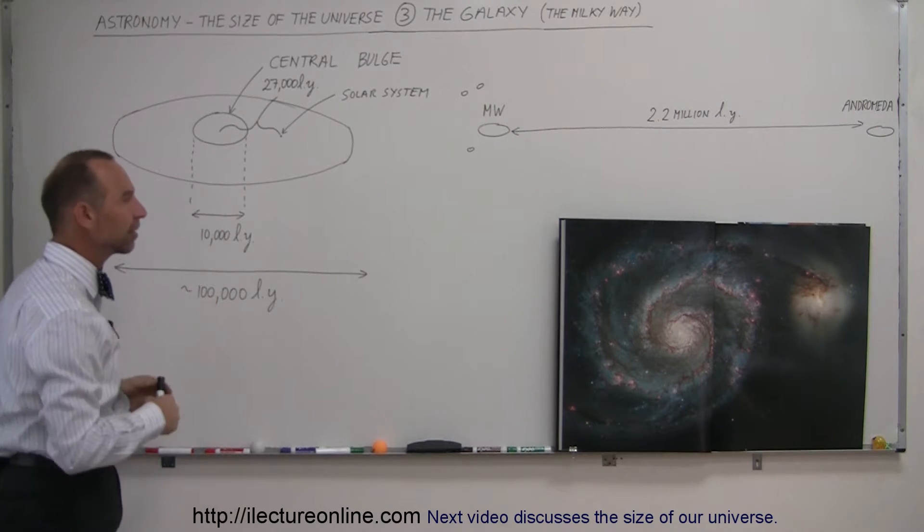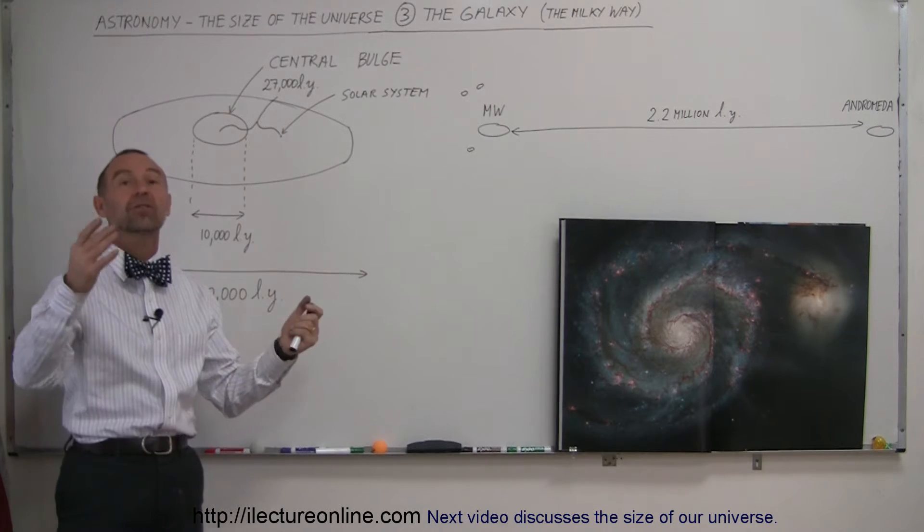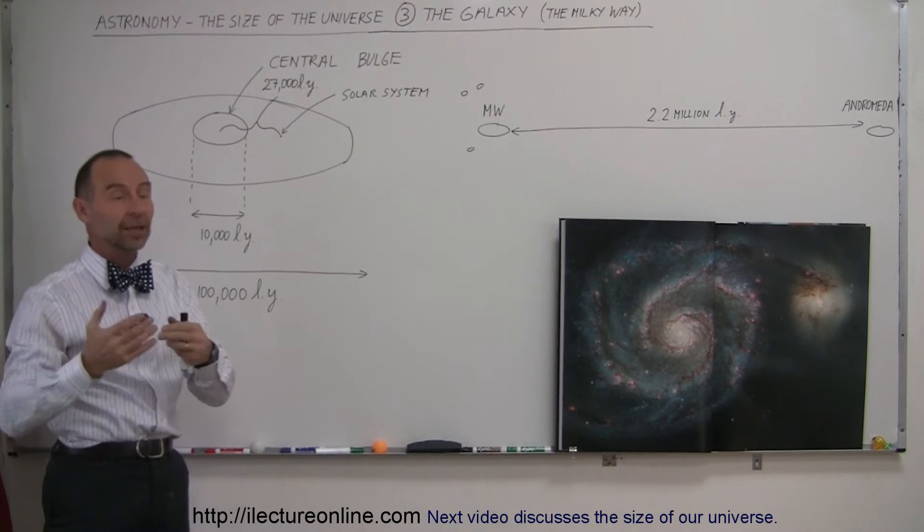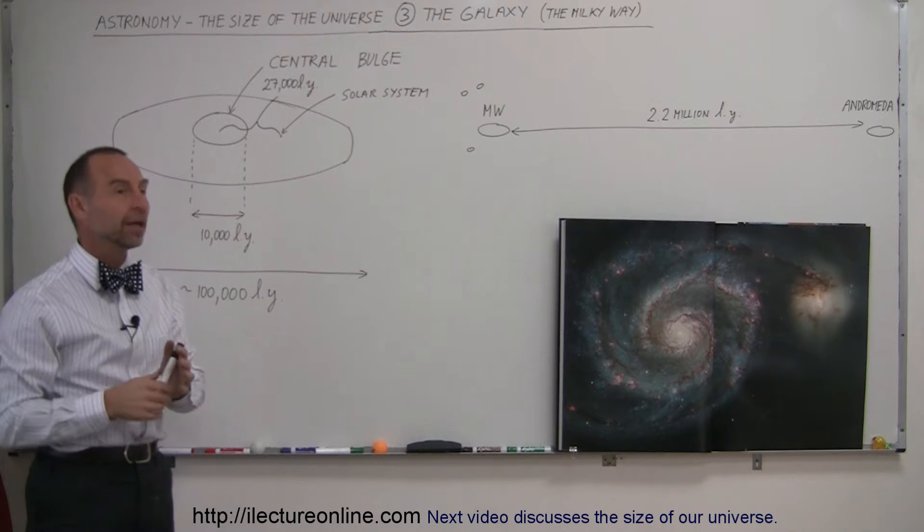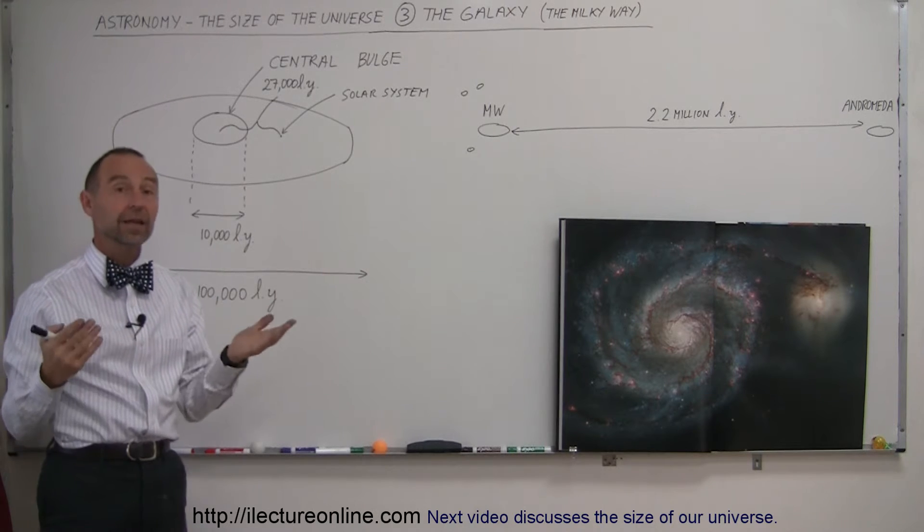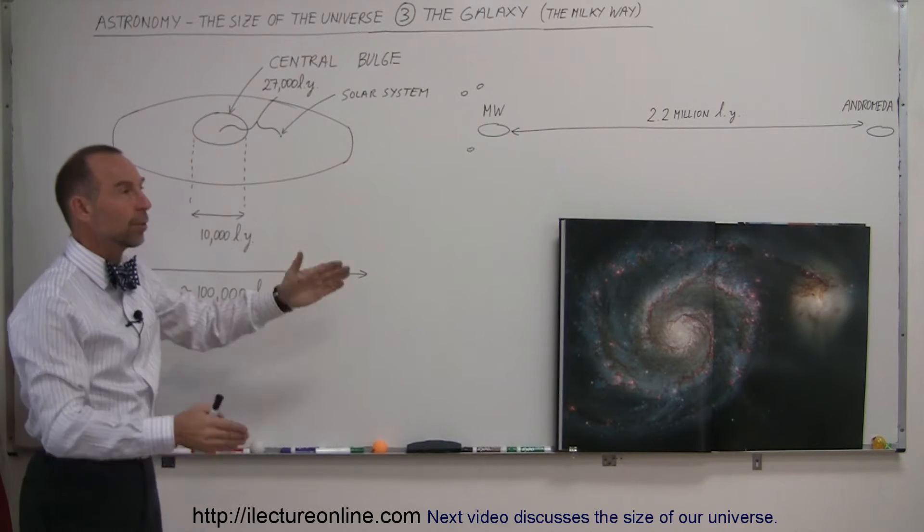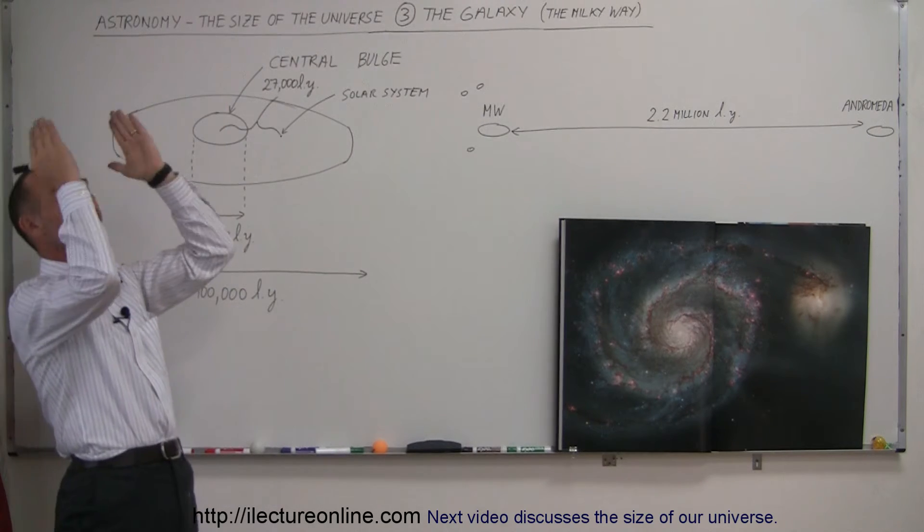And we live in what we call the Milky Way galaxy because in ancient times when people looked at the sky, they saw this band of light across the sky. They didn't know what they were looking at. They called it the Milky Way. It looked whitish. And now what we're realizing is when we look at the sky in the direction of the disk of the Milky Way, we see that large conglomeration of stars.